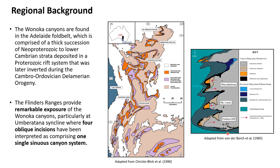The Umberatna Syncline has four incision exposures which have been interpreted as comprising one single sinuous canyon system, based on the alternating paleocurrent directions shown in pink arrows flowing down to the basin in the north. Our research takes a look at the first three incisions and plans to eventually continue on to the fourth incision.